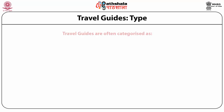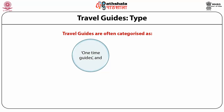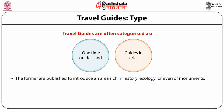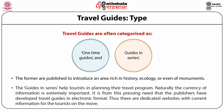Travel guides are often categorized as one-time guides and guides in series. One-time guides are published to introduce an area rich in history, ecology, or monuments, whereas guides in series help tourists plan their travel program and require continuous revision. In guides in series, currency of information is extremely important. With the availability of ICT, publishers have developed travel guides in electronic format that can be downloaded as e-books and used with palmtops, smartphones using apps, and other handheld devices.